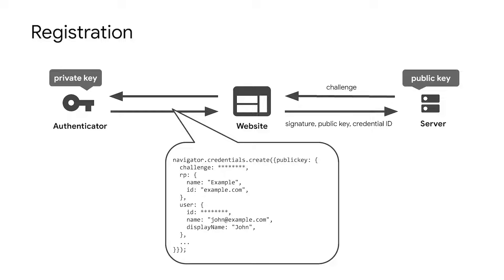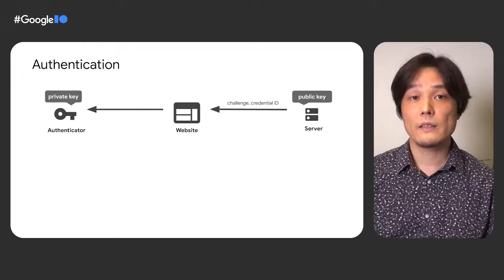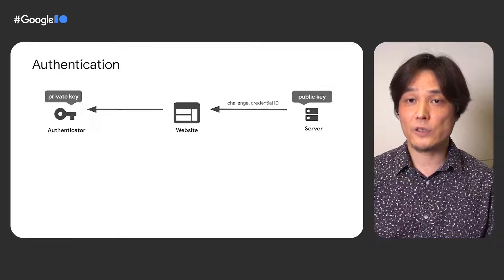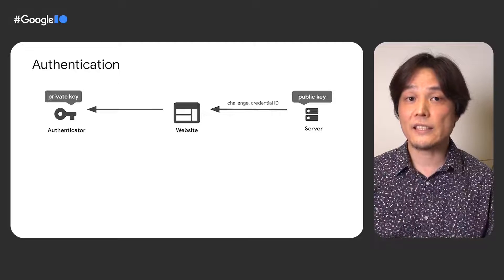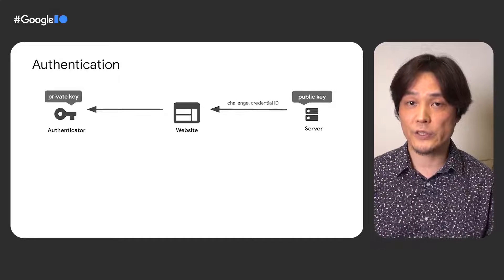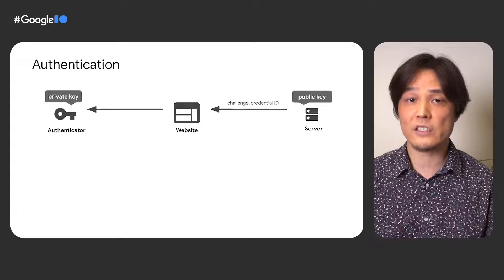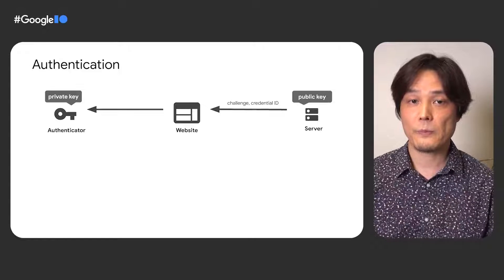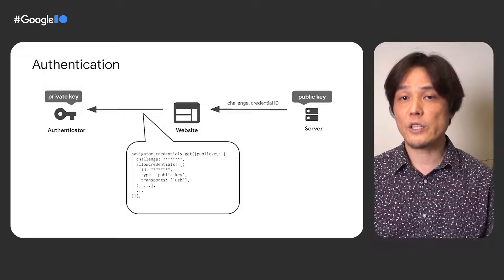The authenticator then signs the challenge and the credential is returned to the server. The server verifies the credential to see if the challenge matches. Once verified, the server stores the public key and the credential ID to the user's account. The next time the website needs to authenticate the user, the website obtains a challenge and a list of credential IDs that can potentially authenticate the user, as the user may have generated several credentials for that website. When the website calls navigator.credentials.get(),